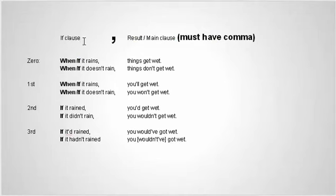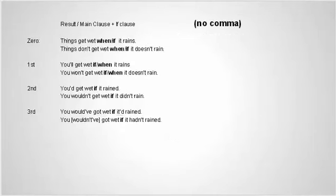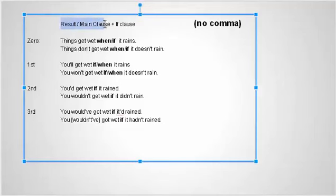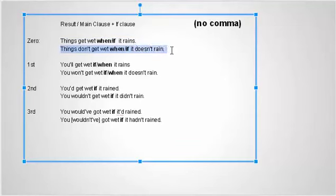We can use the if-clause first, but there must be a comma between the if-clause and the result clause or main clause. We usually start with 'when' or 'if' and then have a comma. However, we can also switch that around and have no comma — the if-clause is last and the result clause is first, with no comma in between. For example: 'Things get wet if it rains.' 'Things get wet when it rains.' 'Things don't get wet when it doesn't rain.' 'Things don't get wet if it doesn't rain.'